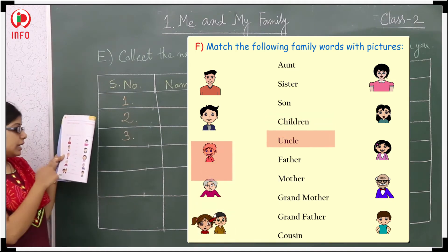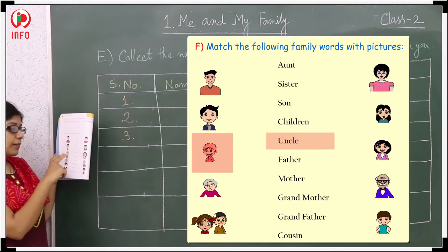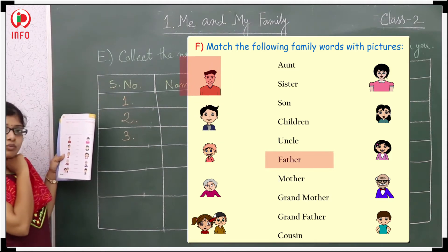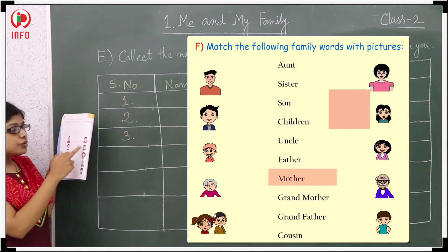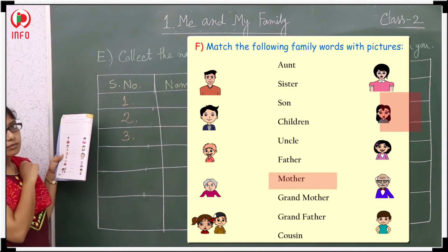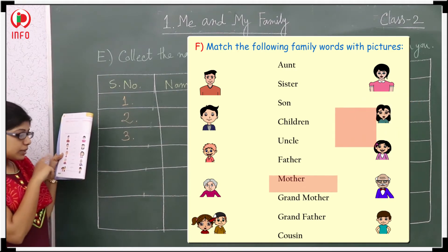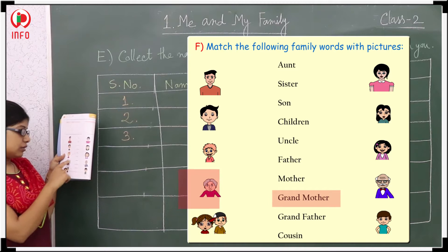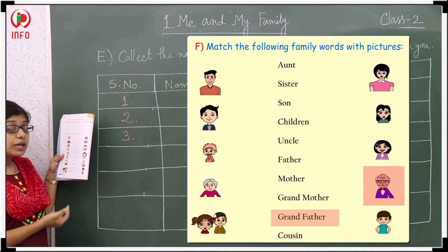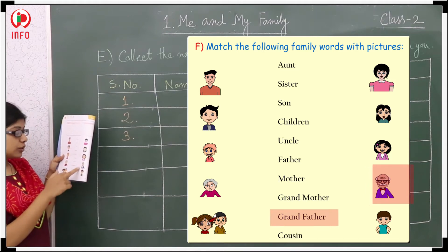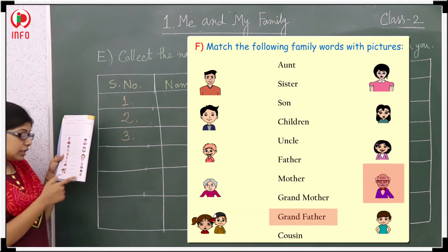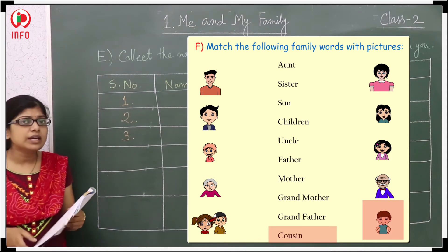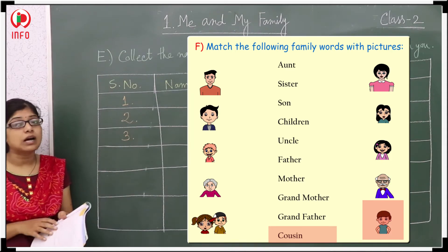Next the uncle — he is looking like uncle, that's why you have to write here. Next the father — see, he is looking like father, so that's why you have to match. Next one the mother — she is looking like mother, so you have to match the mother here. She is looking like the grandmother, so grandmother should be there. He is looking like the grandfather, so that one should be grandfather. And the last one is looking like cousin, so you have to write there cousin. In this way you have completed all the matches.